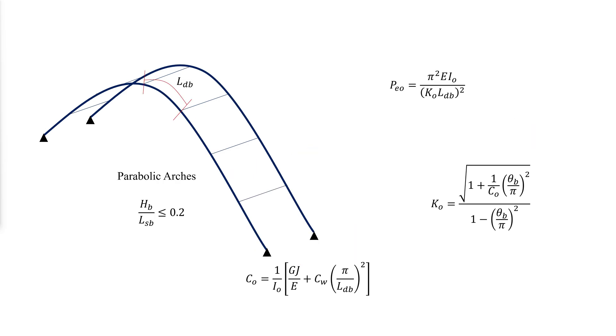For parabolic arcs with doubly symmetric shapes and HB over LSB less than or equal to 0.2, the buckling strength is similar to that of a circular arc. The effective length factor can be calculated using the same equation with an equivalent angle between braces according to this equation.